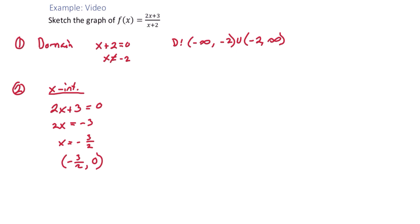To find the y-intercept, we make x 0. So we have 2 times 0 plus 3 over 0 plus 2. This gives us 3 halves, or 0, 3 over 2.